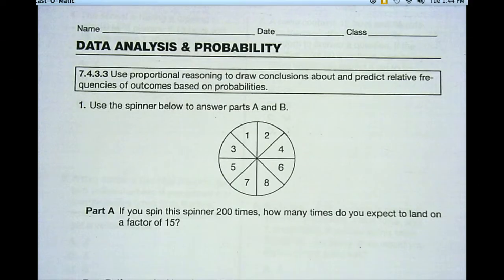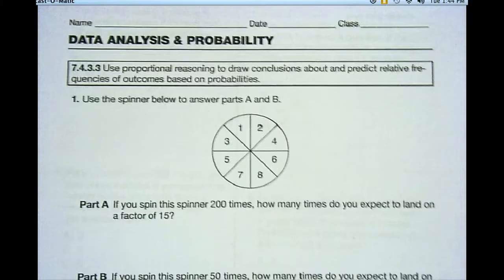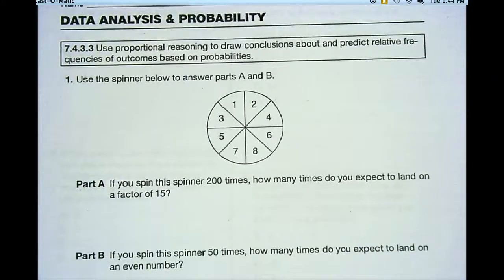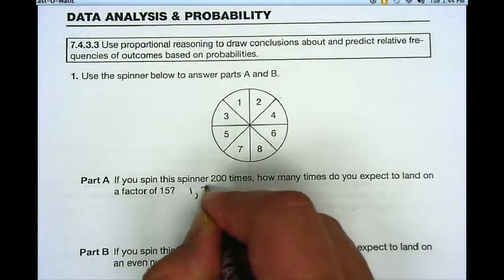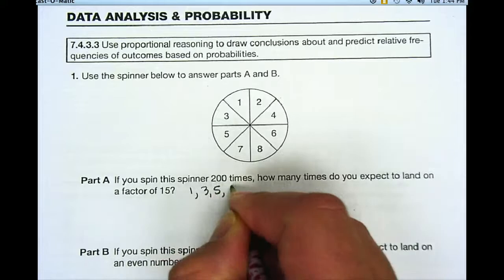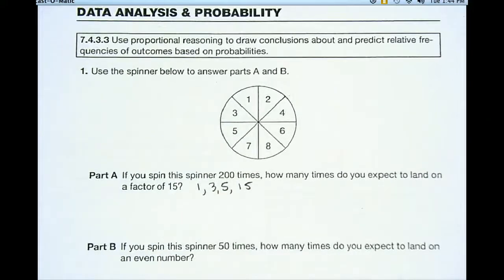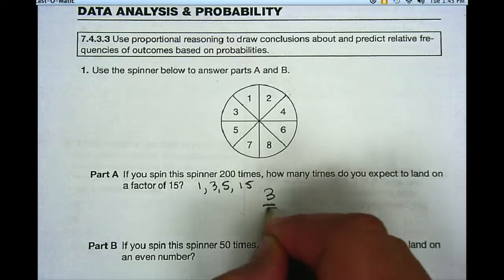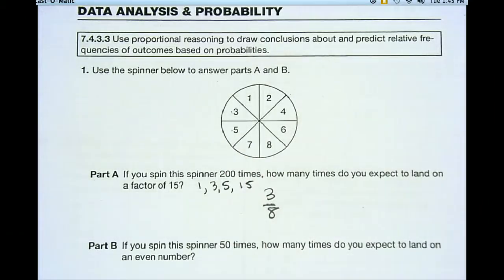So number one looks like this. Use the spinner below to answer parts A and B. Part A says, if you spin the spinner 200 times, how many times do you expect to land on a factor of 15? So first of all, let's list the factors of 15. My factors of 15 are 1, 3, 5, and 15. Now there's 8 parts on that spinner, and there's a 1, a 3, and a 5. And those are the only factors I have of 15 on that spinner. So I have 3 out of 8 that are factors of 15.